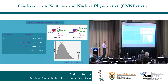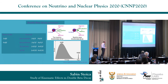For two-neutrino double beta decay, we already have 14 positive measurements, and there are several channels: two neutrinos, as well as neutrinoless with emission of two electrons, two positrons - and this can be accompanied by other transitions such as electron capture with single electron emission and double electron capture.